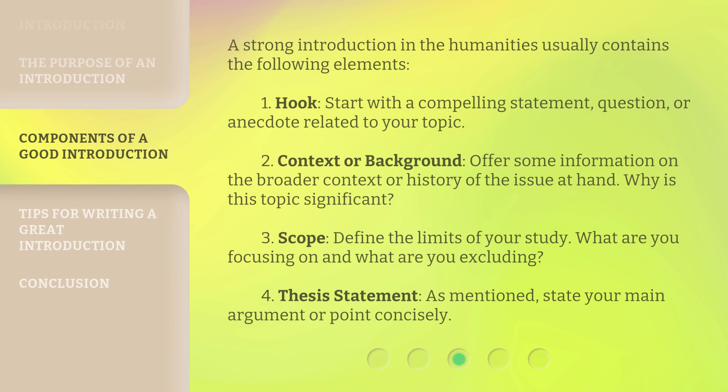A strong introduction in the humanities usually contains the following elements. First, a hook — start with a compelling statement, question, or anecdote related to your topic. Second, context or background — offer some information on the broader context or history of the issue at hand, and ask why this topic is significant. Third, scope — define the limits of your study: what are you focusing on and what are you excluding? Fourth, a thesis statement — state your main argument or point concisely.